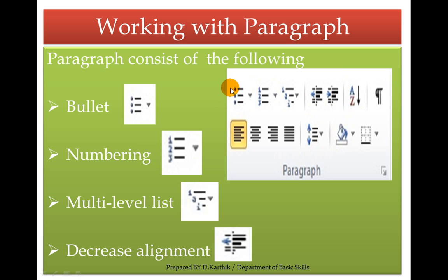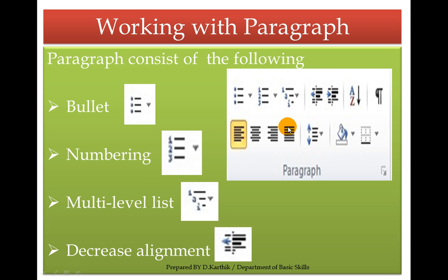This is called bullets and numbering. This is multilevel list. This is decrease alignment. This one is increase alignment, Sort, and this is show and hide. This one is align text left — shortcut is Control L. This is center alignment — shortcut is Control E. This is align text right — shortcut is Control R. This is justify — shortcut is Control J. This is line and paragraph spacing. This is shading and this is called border. And this one is called the paragraph dialog box launcher.